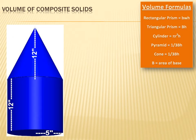I've got a composite figure on the left, and I can see that it's a cylinder with a cone sitting on top of it. If I were to calculate the volume of the cone and then add to that the volume of the cylinder, I'd have the volume of the composite figure. Well, let's tackle the cone first.